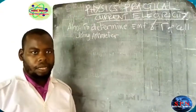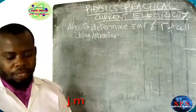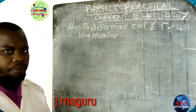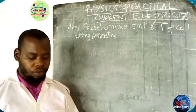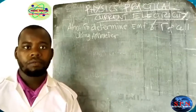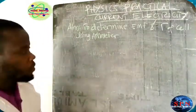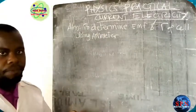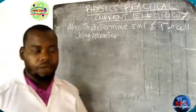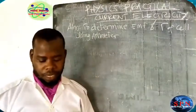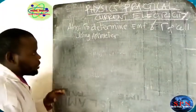In this practical, you are supposed to know the connection of the circuit — that is very important. In order to know the connection, you are going to have an ammeter, resistance boxes, a switch, and a cell.